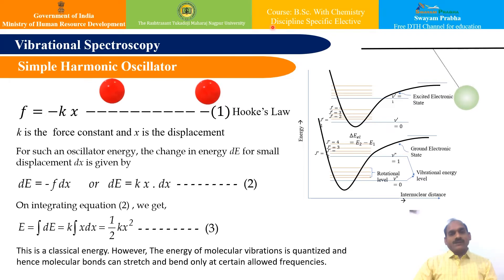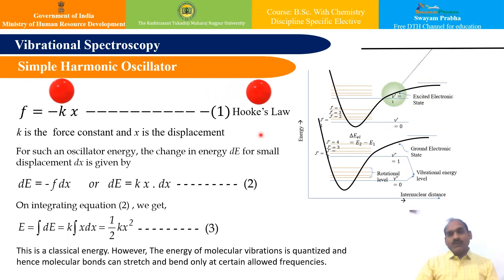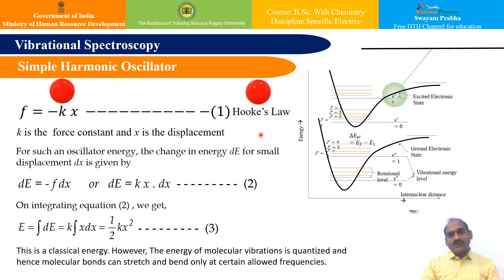The Vibrational or Infrared Spectra appears when transitions are induced among the Vibrational Energy Levels due to the absorption of energy radiations in the spectral range of 500 to 4000 cm inverse, and hence this is also called as Infrared Spectra. It appears due to the change in dipole moment and due to the vibrations or oscillations in the molecule. In this figure, the black line indicates the electronic region or electronic state.